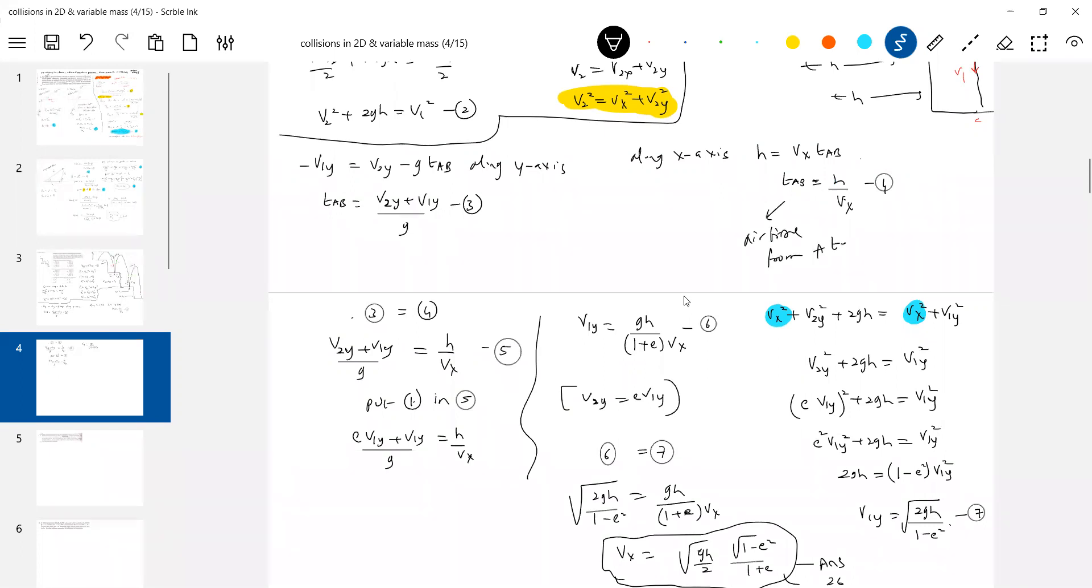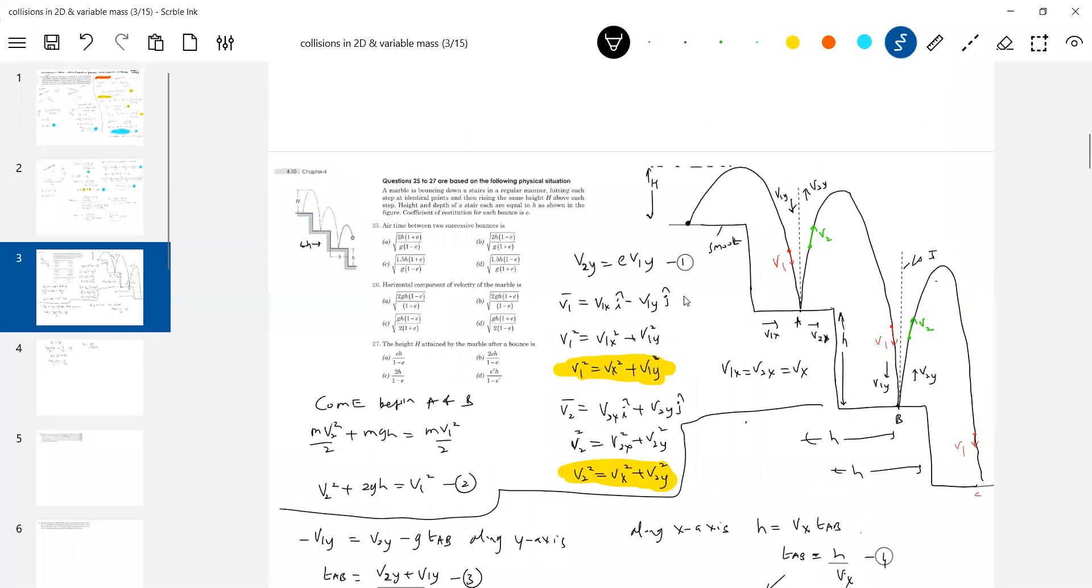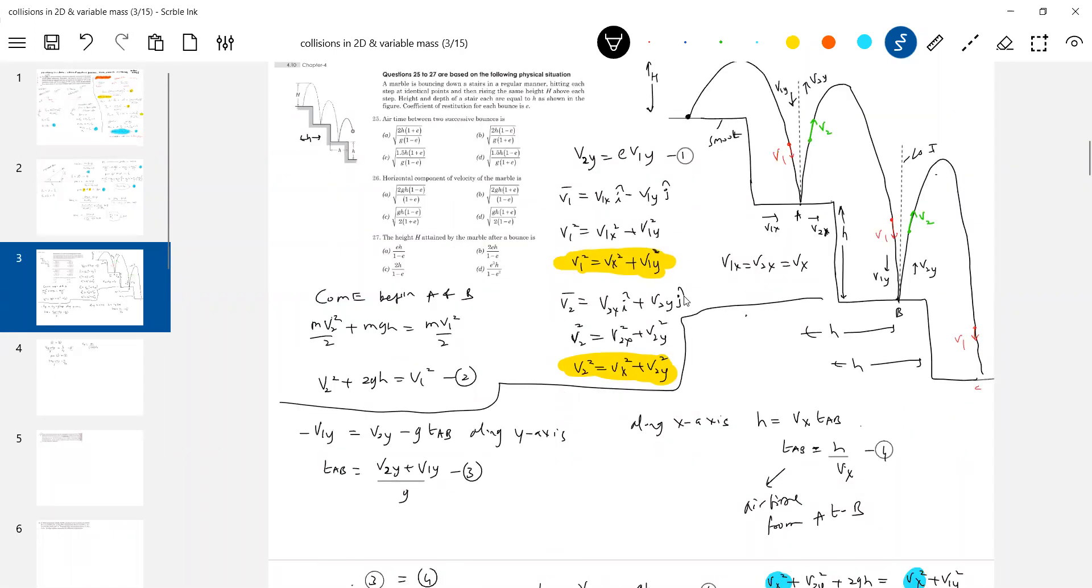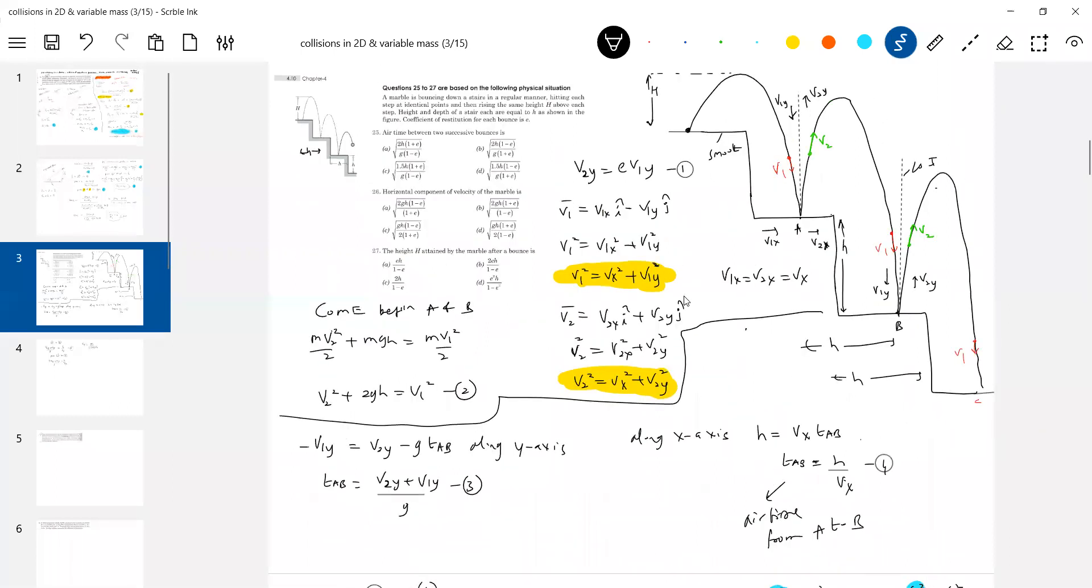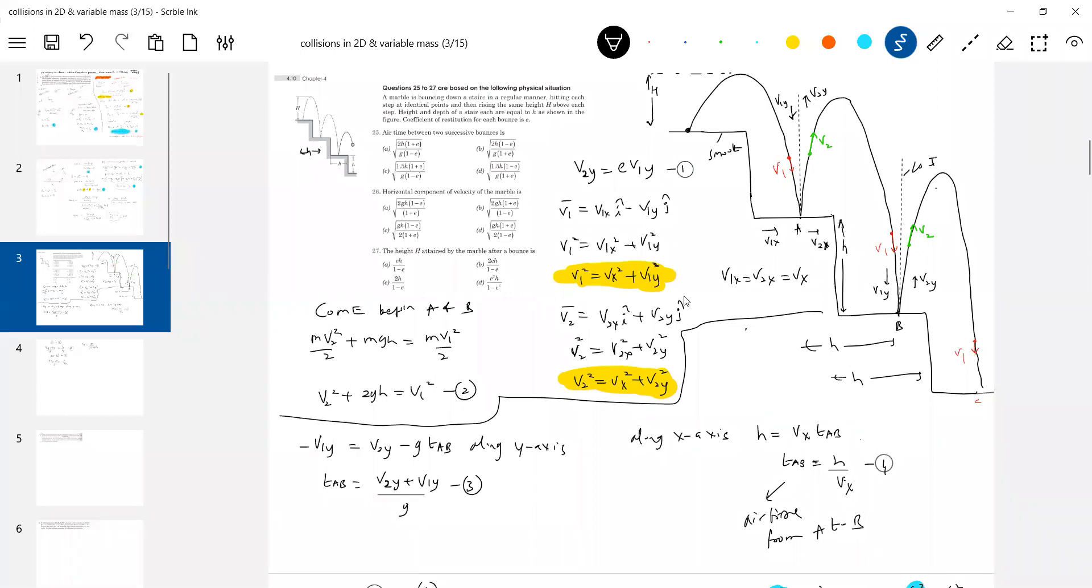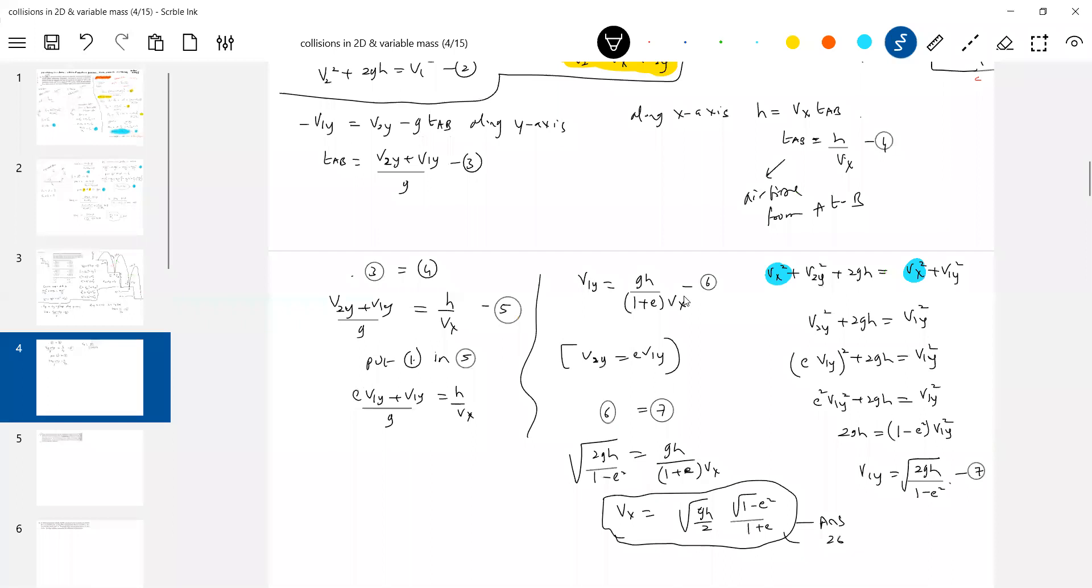And then the height attained by the marble after a bounce. It's asking to calculate this H. How to calculate that capital H? How to bring capital H into the picture? For that, we need v2y. v2y is needed. So can we bring v2y? From vx, can you... We know v1y. v1y and you know v2y. v2y is e*v1y.